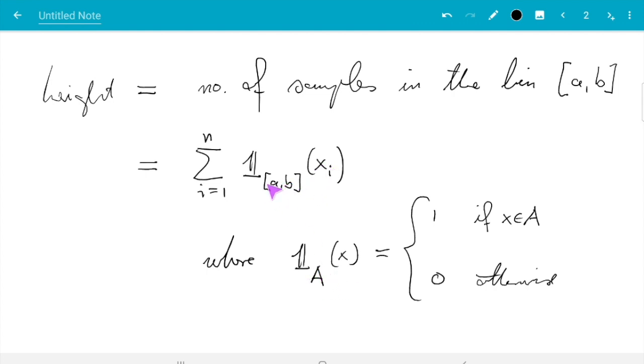If we do that then each of these terms here is 1 or 0. The terms where Xᵢ is in the interval—so this set A is the generic set but here we use it for the interval A, B—for every Xᵢ which is in the bin we count 1 here and for everything else we count 0. So if we add it up we get as many ones as there are Xᵢ in the bin. So we get the total number of Xᵢ in the bin. That's how it's done. And as an abbreviation I want to call that quantity just for here N_{A,B} which is the number of samples in the bin A, B.